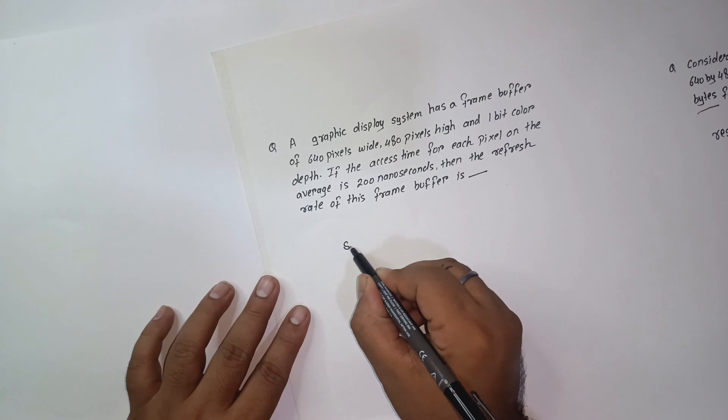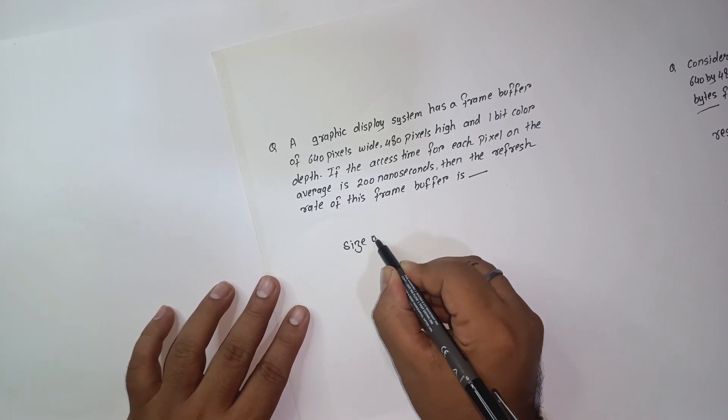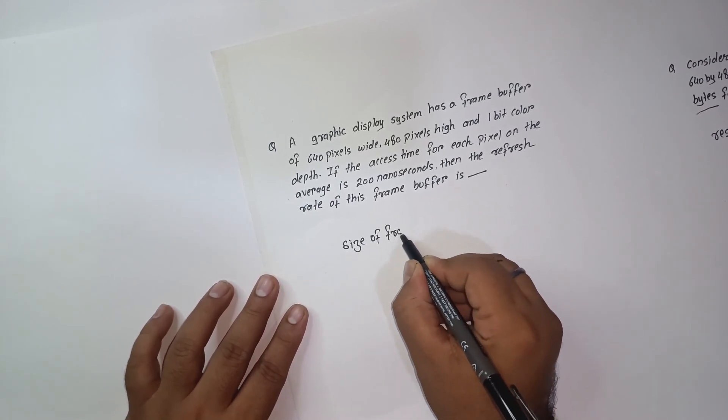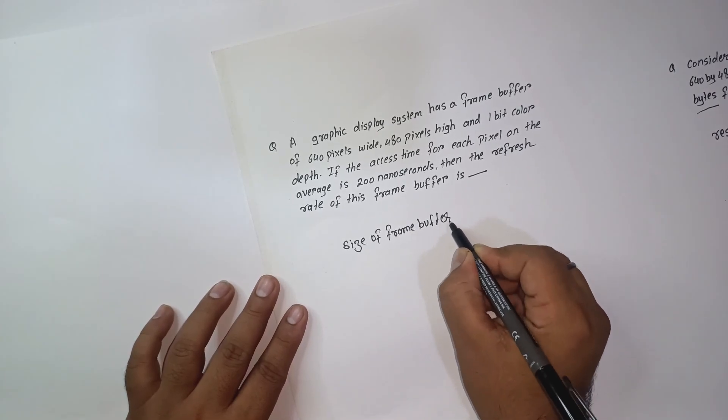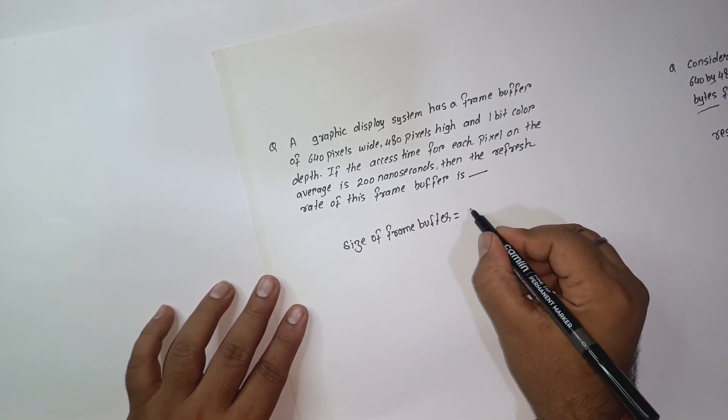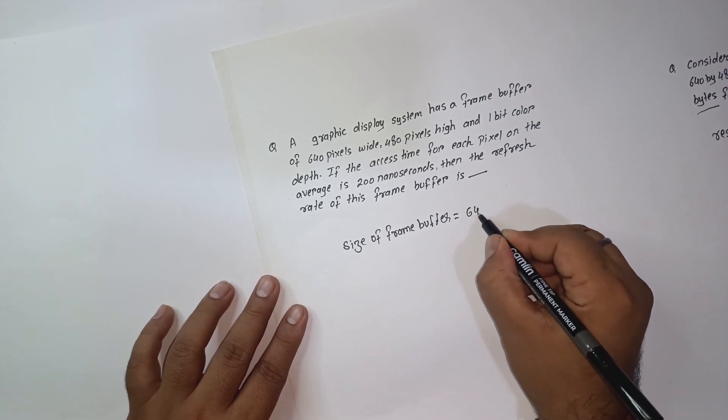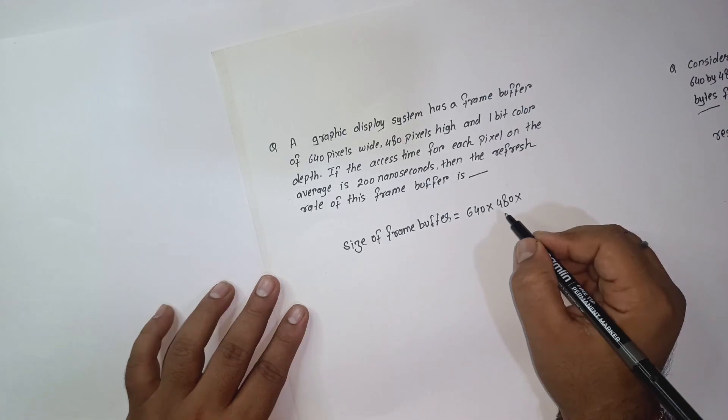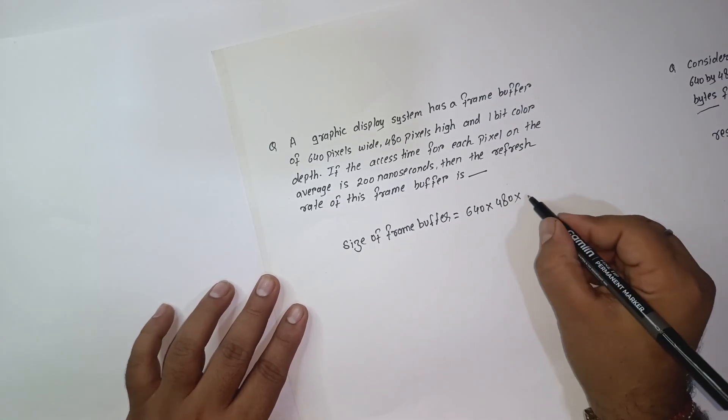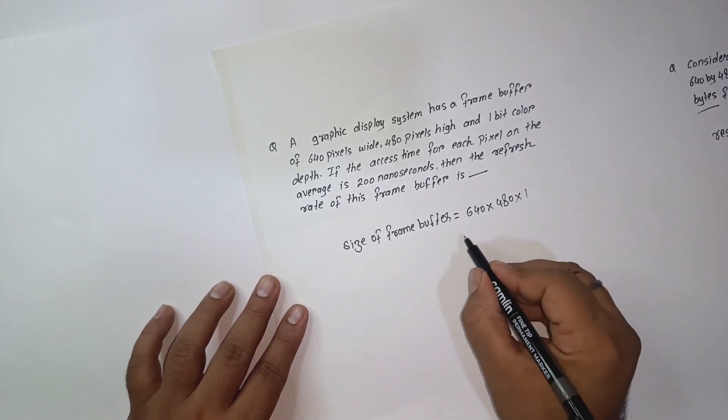So here size of frame buffer will be 640 into 480 into color depth. So the color depth here is one, so it means 640 pixels.